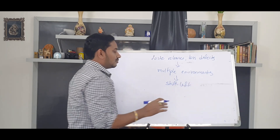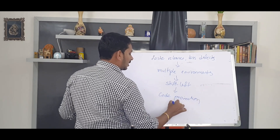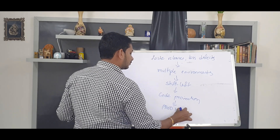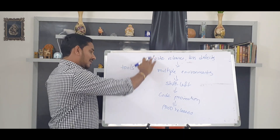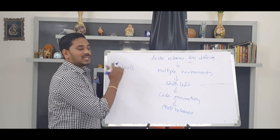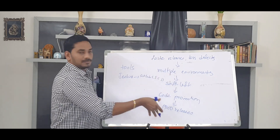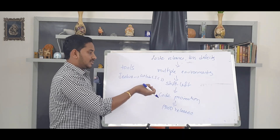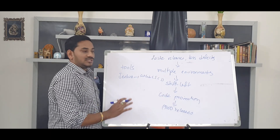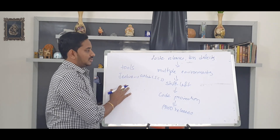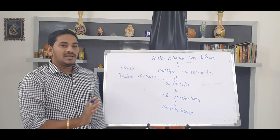Shift left means maximum checks happen in the development environment, then promotion to other environments like QA and staging, and finally release to production. We use all the tools discussed. The procedure is the same whether you use Jenkins or GitLab CI/CD. There are different terminology and words, but the purpose is always the same. If you understand the concept, it will be very easy to learn any tool. Thanks for watching. See you in the next video.